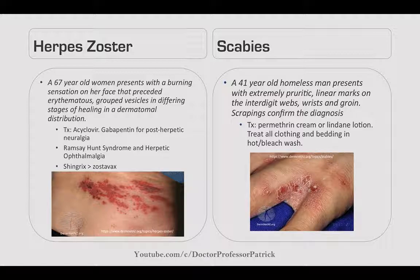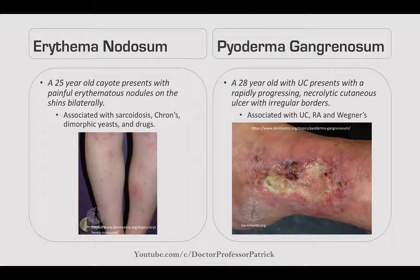Scabies: a 41-year-old homeless man presents with extremely pruritic linear marks on the interdigital web spaces, wrists, and groin. Scrapings confirm the diagnosis. Treat with permethrin cream or Lindane lotion. Treat all clothes and bedding with hot bleached water.